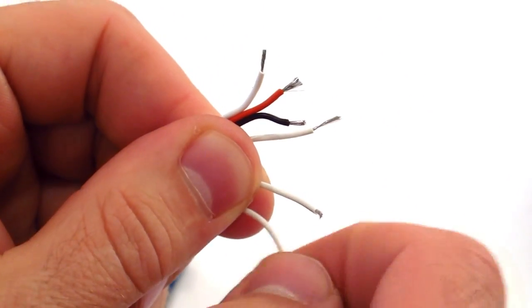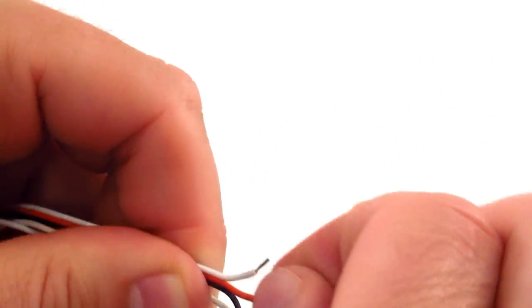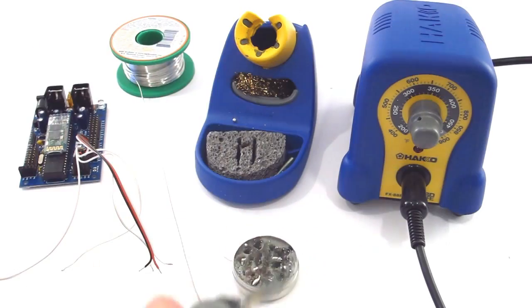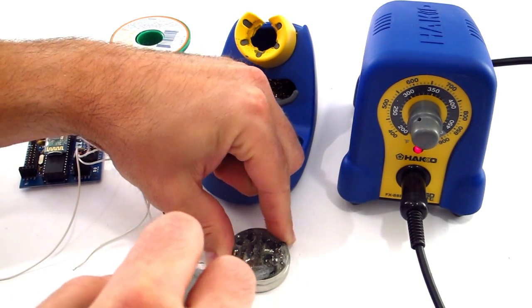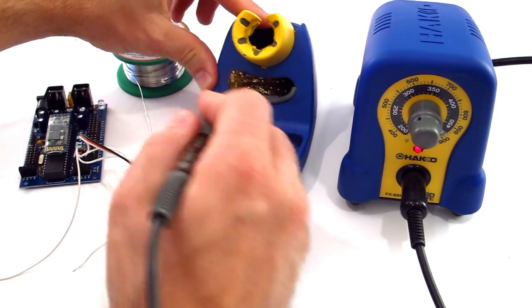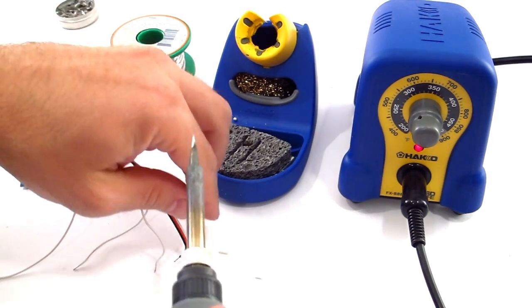Let's prepare to tin the wires by twisting them so they're not all frayed at the end. Now, clean off the end of your tip if you have any of the tip cleaner. Wash the end of your soldering iron off.